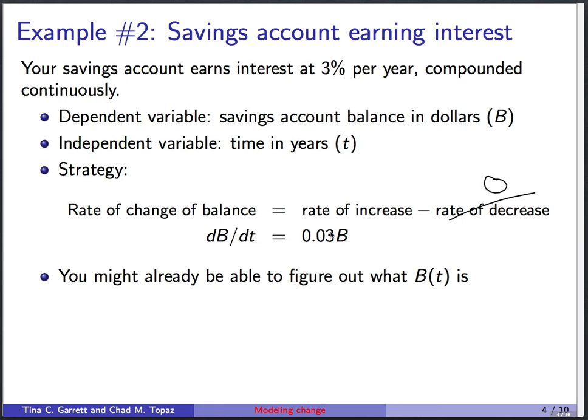If you remember solving interest problems earlier in this course, you might already know what the unknown function b of t is. Exponential growth is what you get when you have continuously compounded interest.